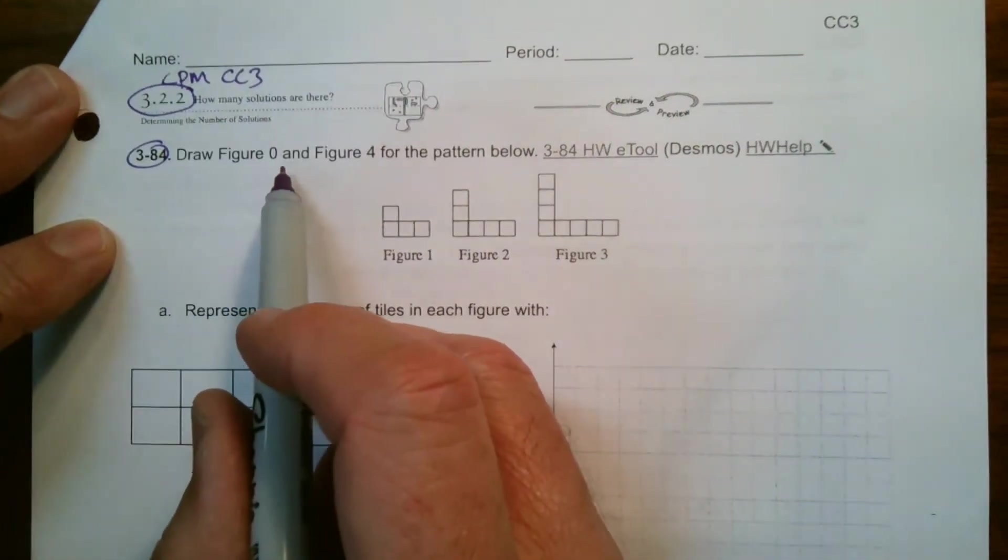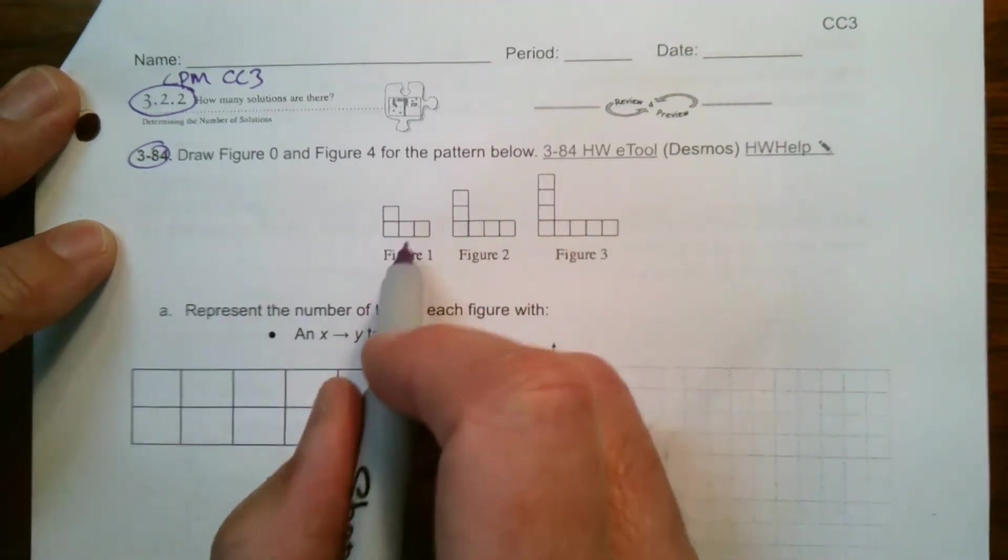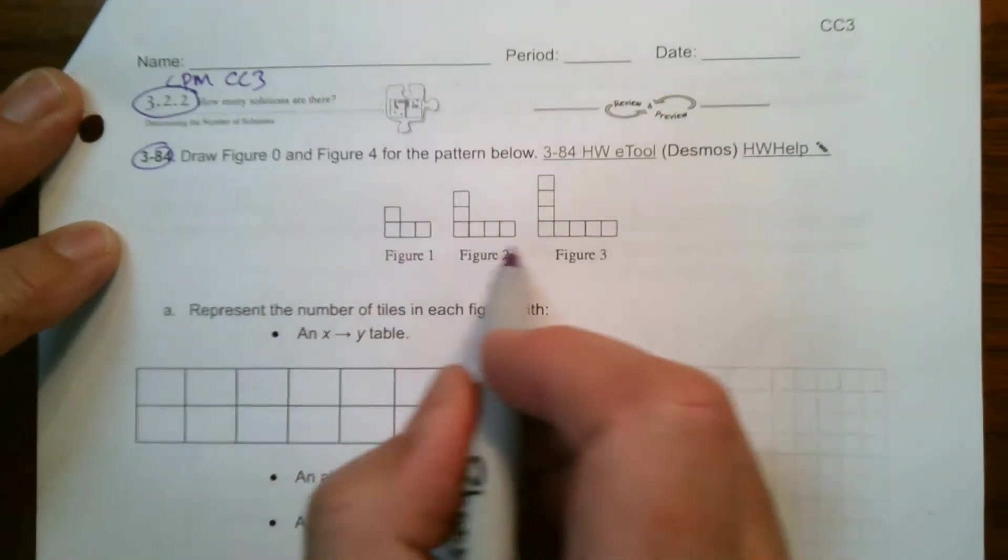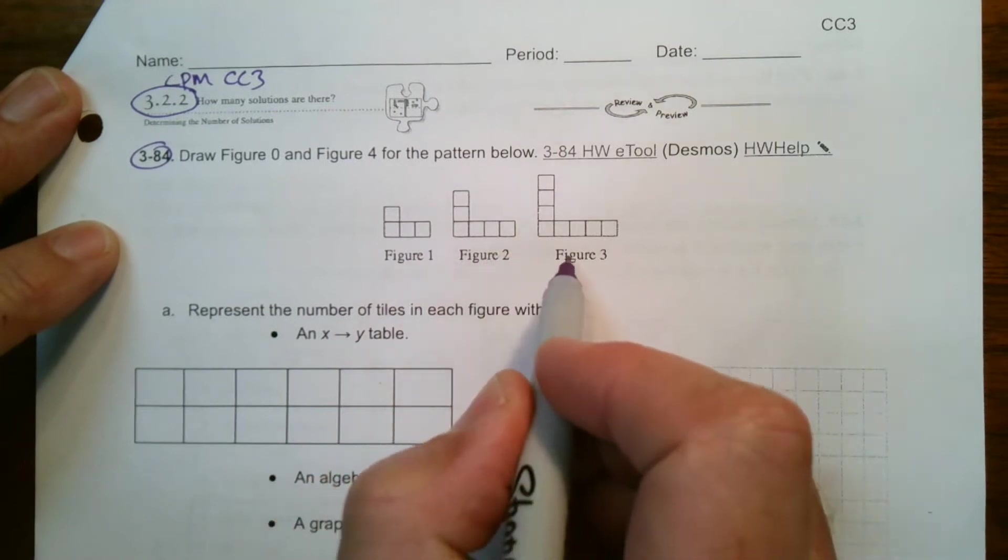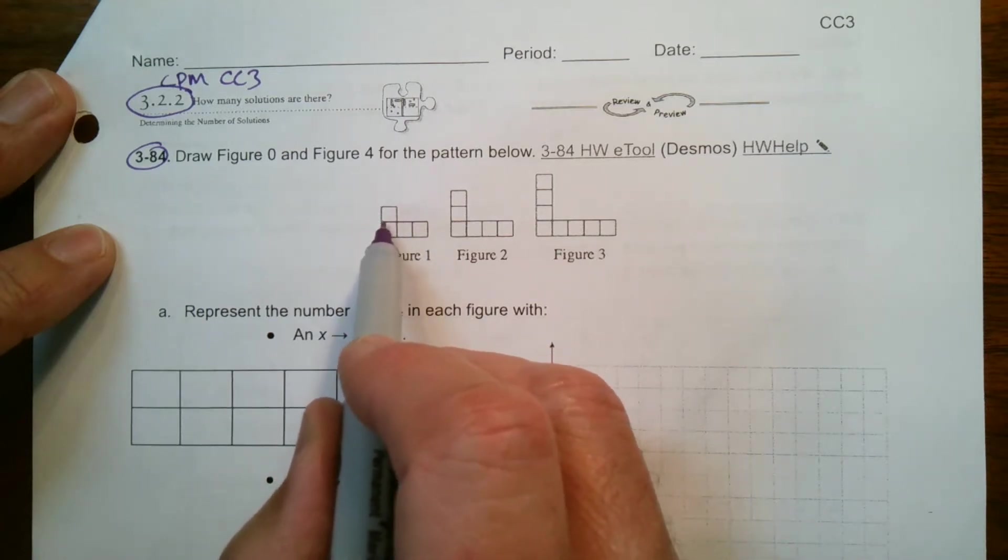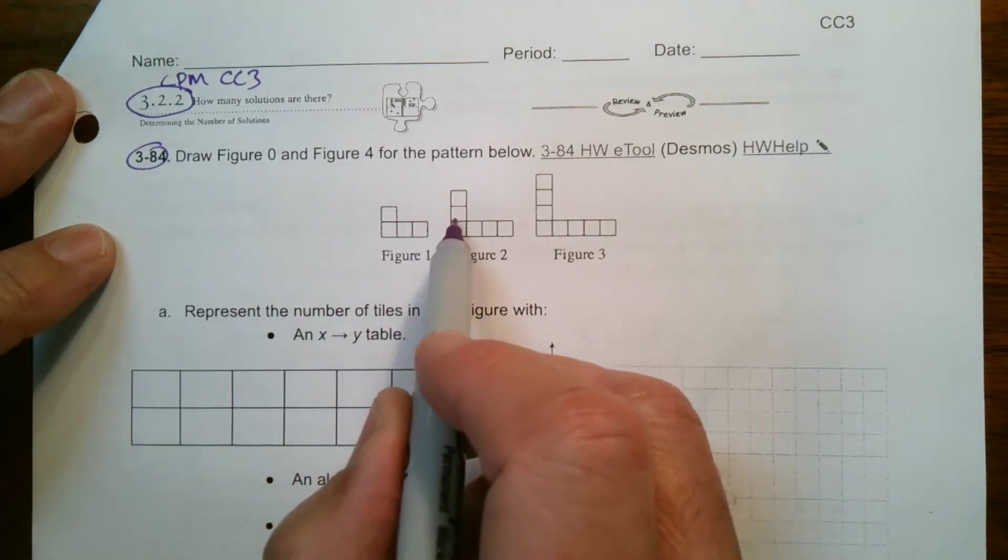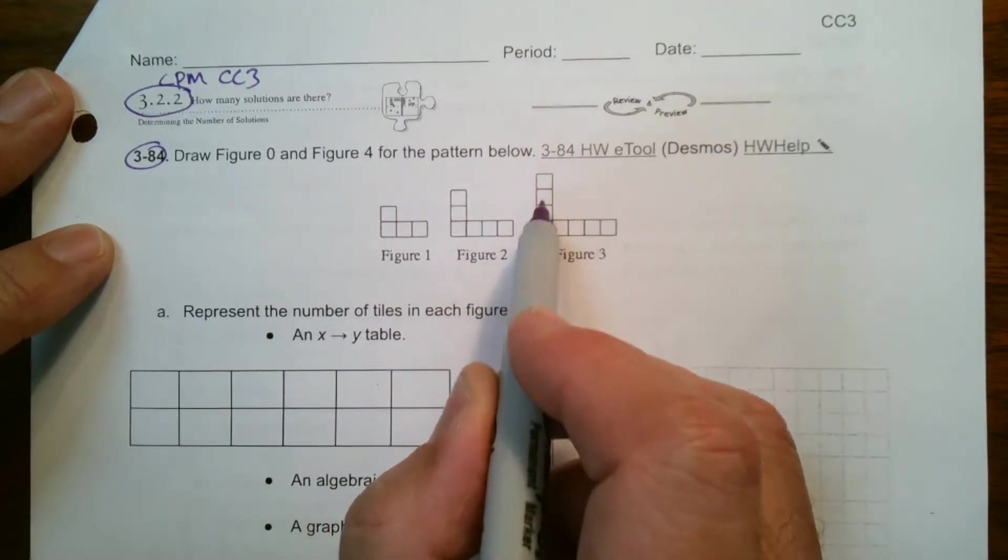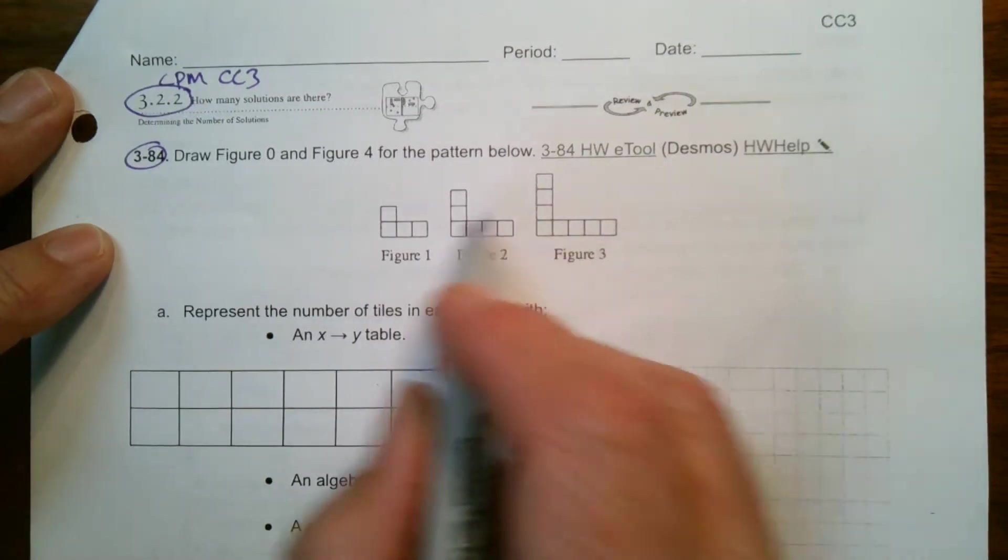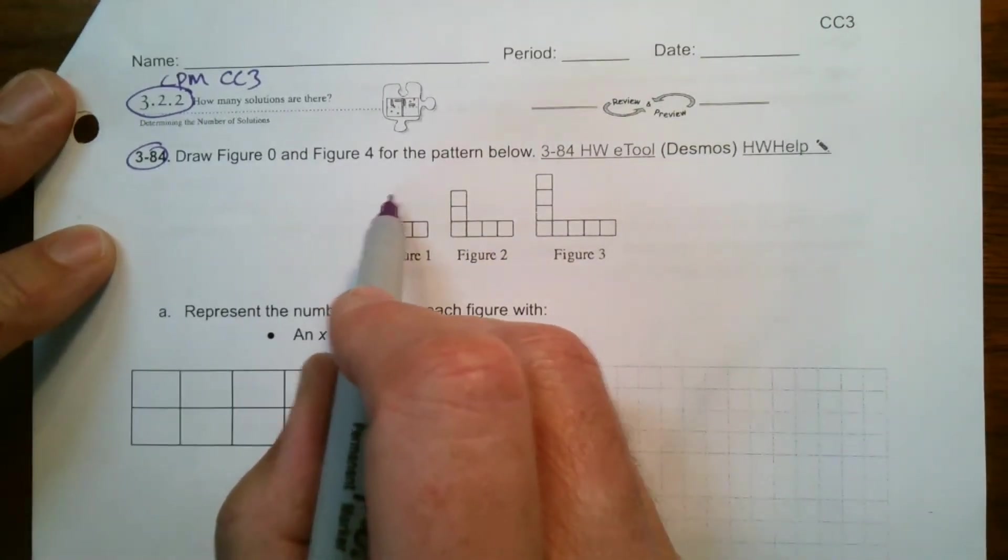So it says draw figure zero and figure four for the pattern below. So here's our pattern, our first figure, second figure, third figure. If I look at just the growth of this, right, first figure has one block, it's one block on top of the horizontal of three. This has got two and then on top of four, and this is three on top of five. So you notice each one is growing by one, so it's getting taller by one.